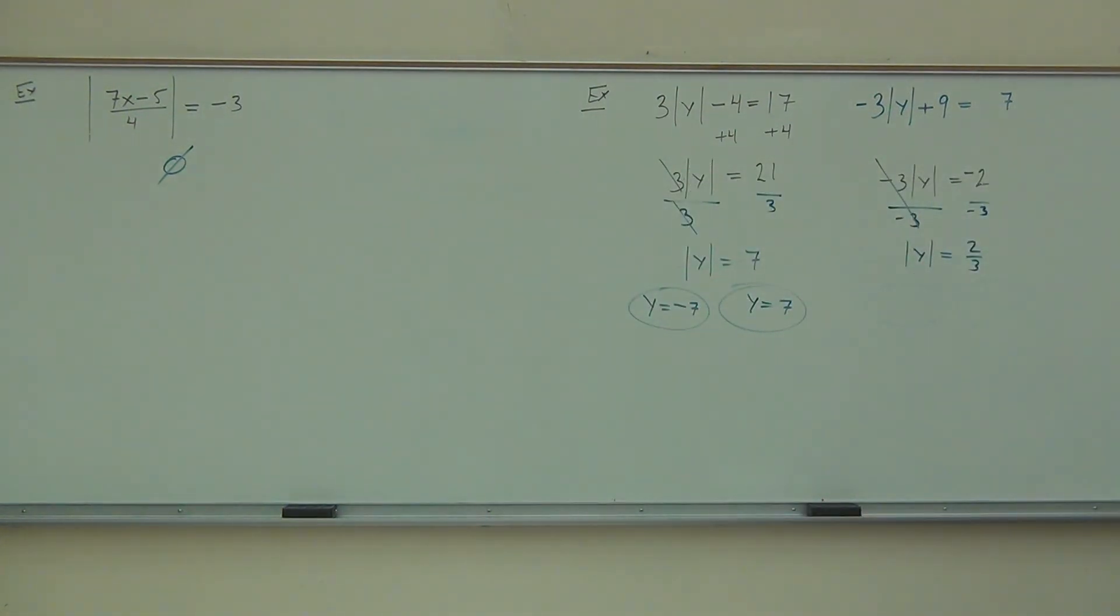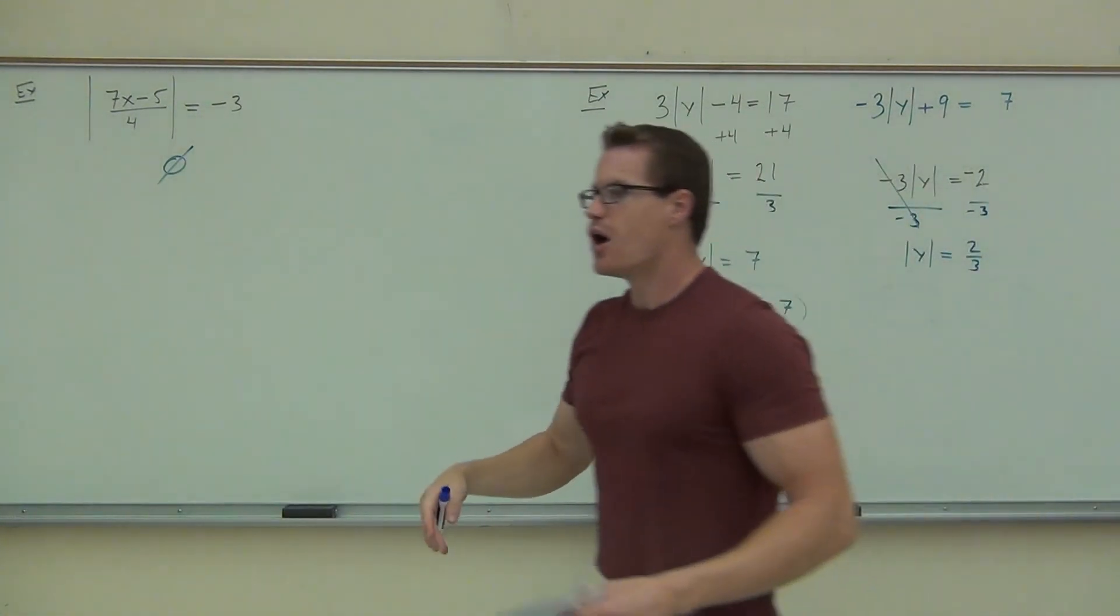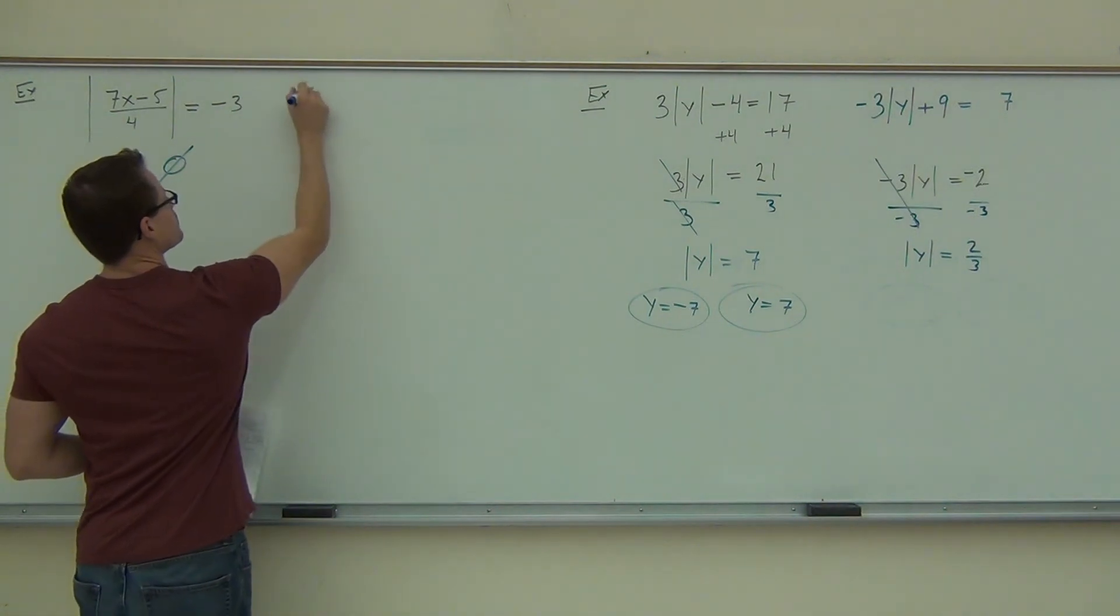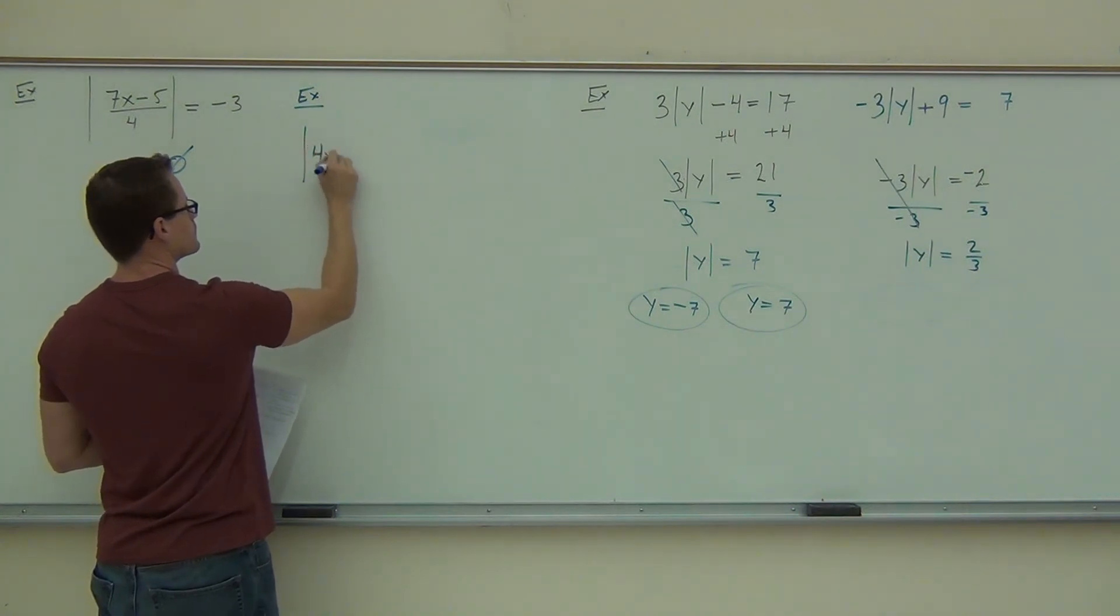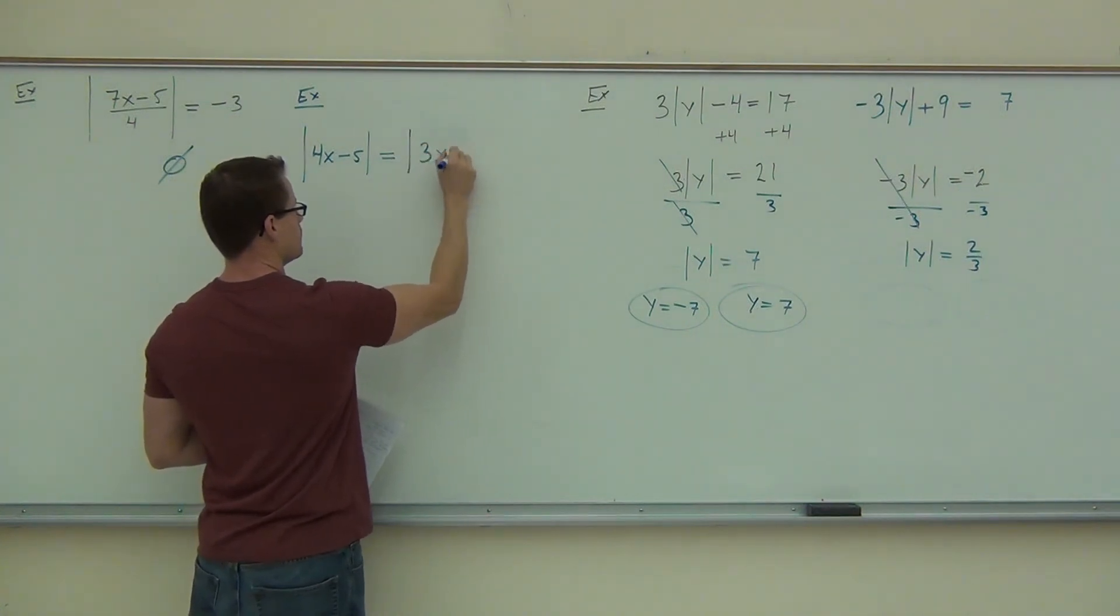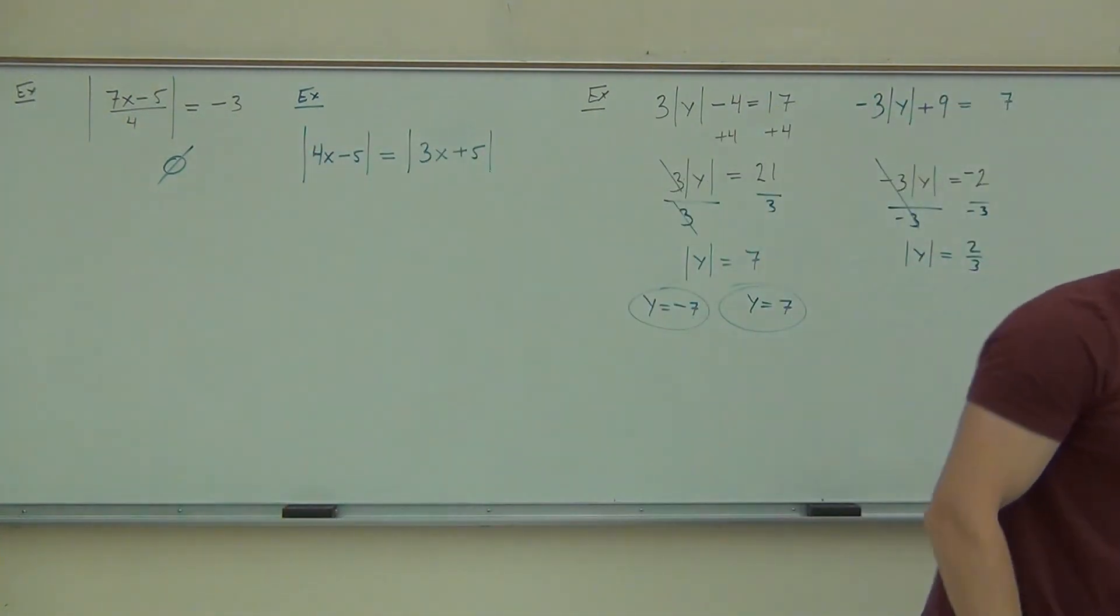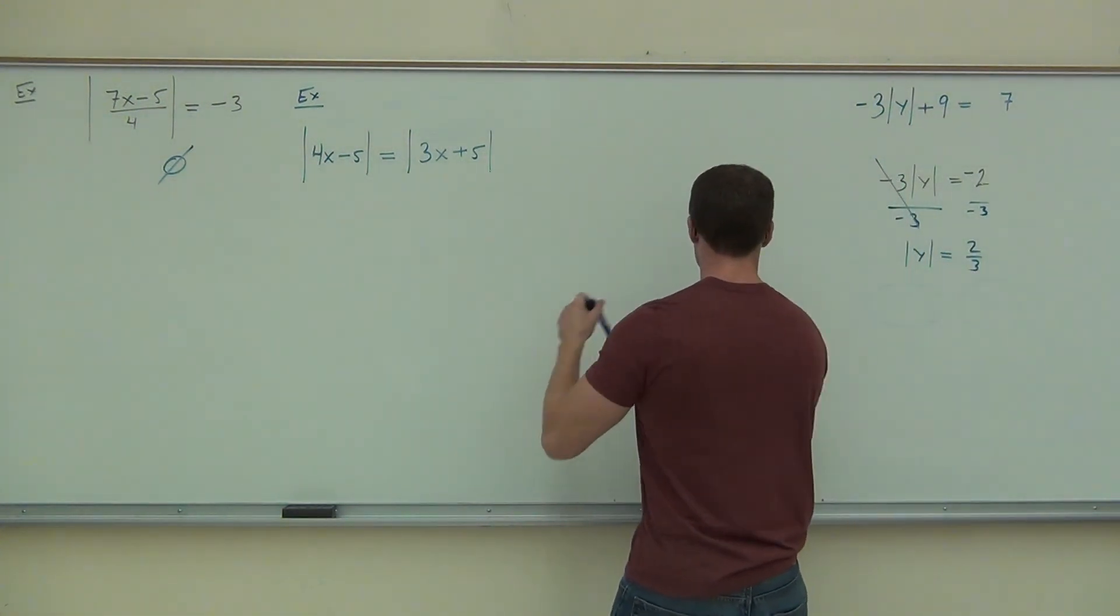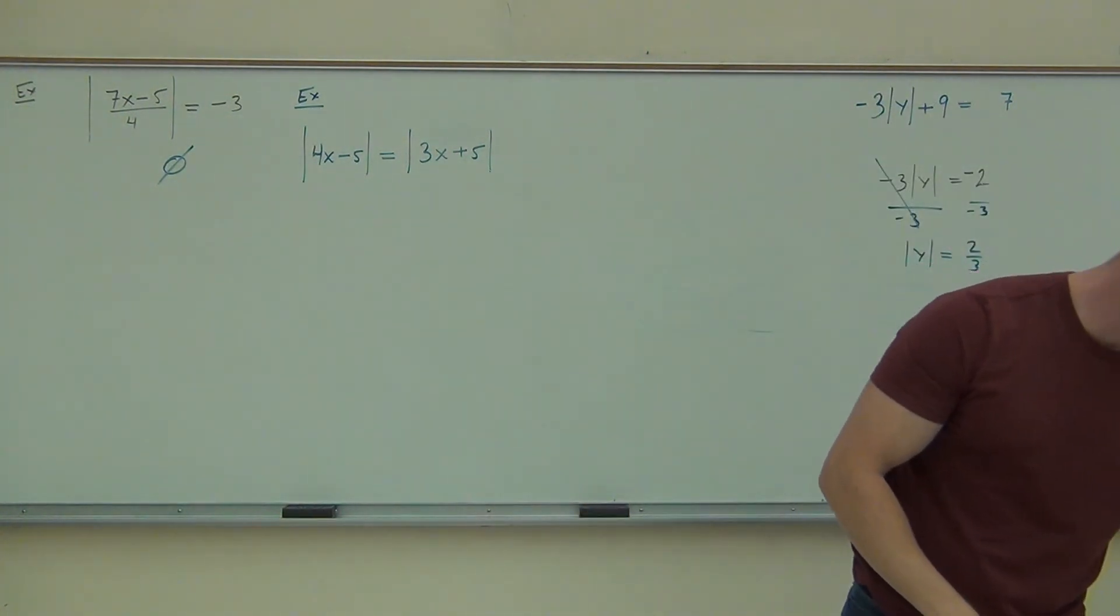Now, the last question we have to ask is, what would happen if, instead of having like an absolute value equal to a number like we've had in every other case, what happens if we have an absolute value equal to an absolute value? So, for instance, like that, what are we going to do there? Would they have to be equal to each other? Well, we'll talk about that. We've got several cases, okay? We've got certain cases which we're going to take a look at.